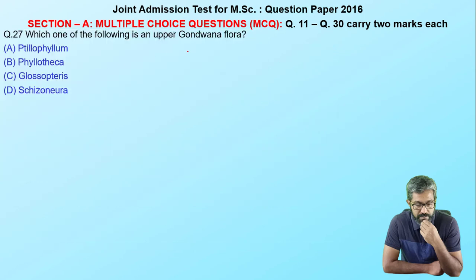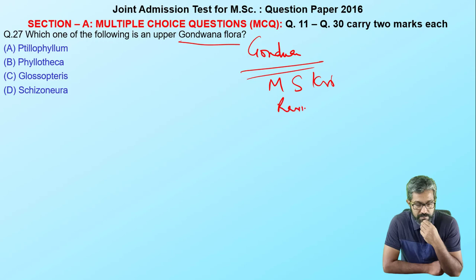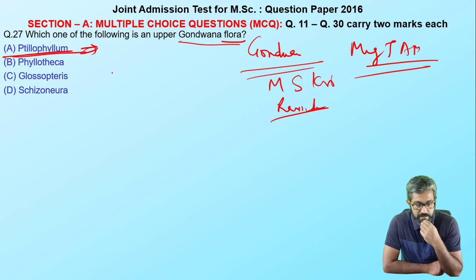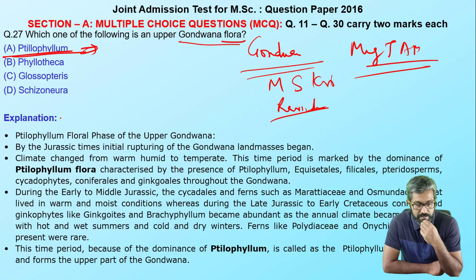Moving to the next question related to Gondwana — I always tell aspirants to remember everything about Gondwana. Whichever book you refer to — M.S. Krishnan or Ravi Kumar — just mug up Gondwana for JAM, as they ask questions from it every time. If you have read Gondwana flora and fauna, you will easily know that Gangamopteris is the answer. My option is A: Gangamopteris.